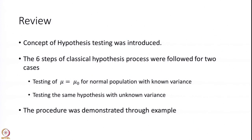So far we introduced the concept of hypothesis testing. We gave six steps of the classical hypothesis testing process and we followed these steps to derive the hypothesis testing procedures under the assumption that the population is normal. We considered two cases: one when the variance of the population is known, and the other when the variance is unknown. Both times we tried to test the null hypothesis that the mean of the population is equal to a fixed value mu₀.